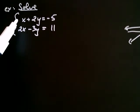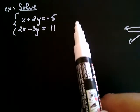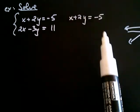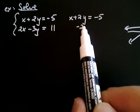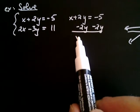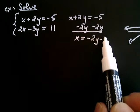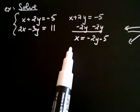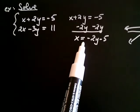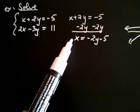So I'm going to decide to get the x by itself in that first equation. I take the first equation, x plus 2y equals negative 5, and isolate x by subtracting 2y from both sides. I get x on the left and on the right-hand side I get negative 2y minus 5. So the equation x equals negative 2y minus 5 is the same line as the original first equation, but now I have x isolated.